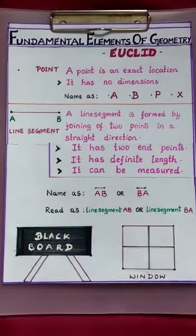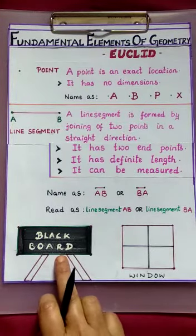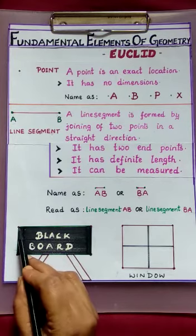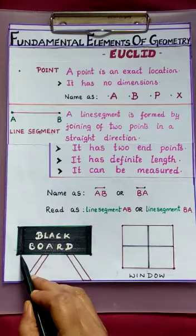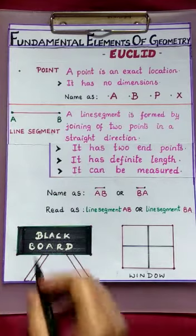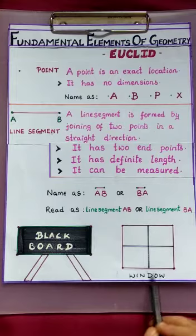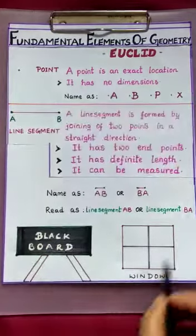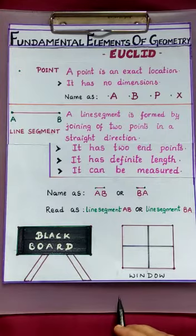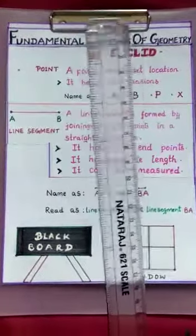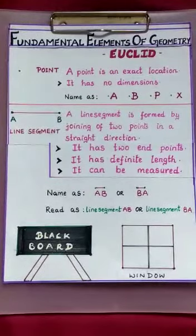Now, here you observe the examples of line segment in our surroundings. Here is a blackboard. Around the edges of the blackboard, if you observe, we can find line segments. Here to here, one line segment. Here to here, one. Here to here, third one. And here to here, fourth one. So around the edges of the blackboard, which gives an idea of line segment. Similarly, we have window. Around the edges of the window, which gives an example of line segment. Similarly, if you observe this white paper, the edges of the paper. Like that, if you observe the scale here, the edges of the scale also give examples of line segment. So this is the way many examples of line segments in our surroundings we can observe.